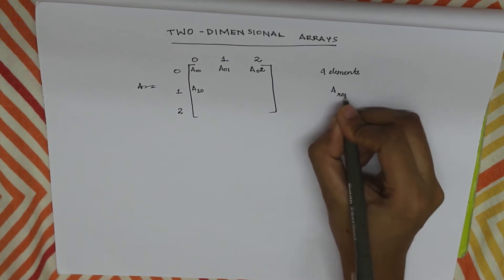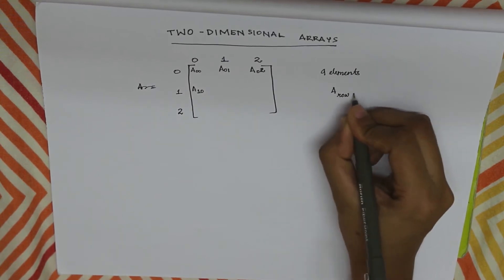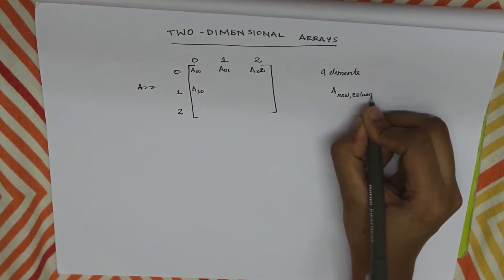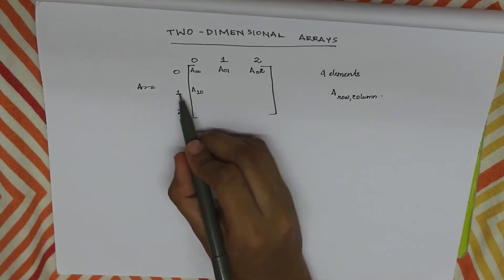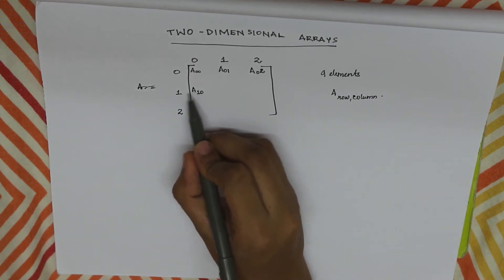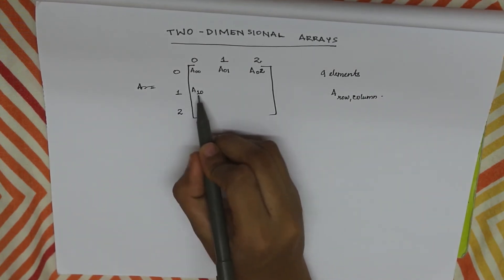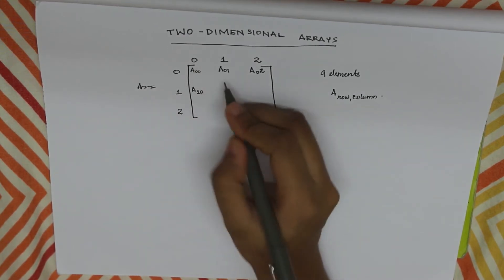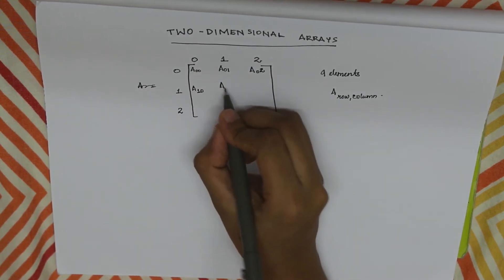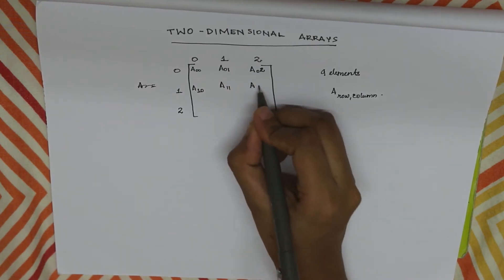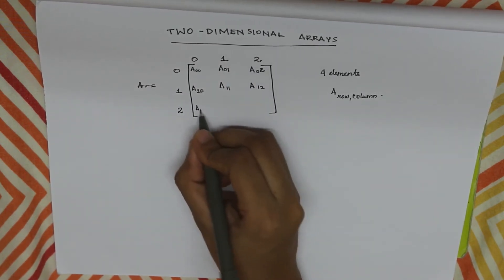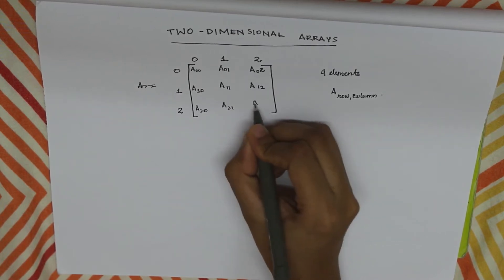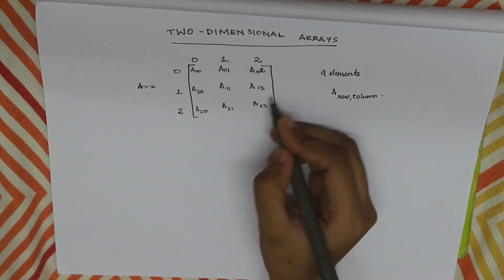A of two, zero. A of two, zero. A of two, one. A of two, two.